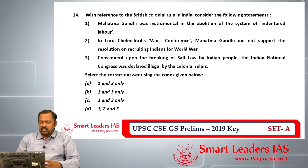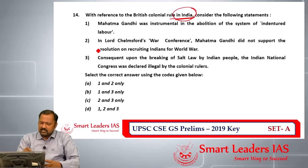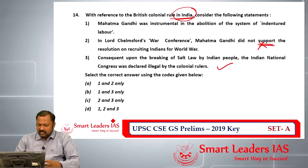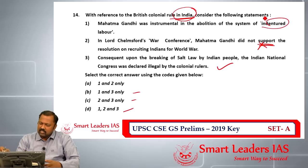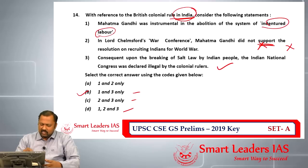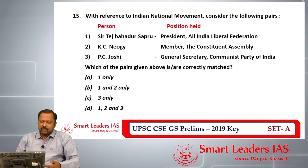Question number fourteen is about British colonial rule in India. The first statement — that Mahatma Gandhi was instrumental in the abolition of the indenture labor system — is partially true in South Africa but not fully applicable to India, where indenture labor was abolished in the 19th century. The second statement — that Gandhi did not support recruitment of Indians in the war at the Lahore Congress — is wrong, as he did support it. The third statement, about the Indian National Congress being declared illegal after the breaking of the salt law, is correct. The answer for question fourteen is B.